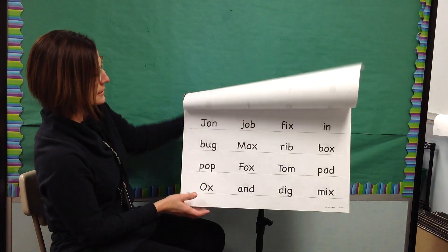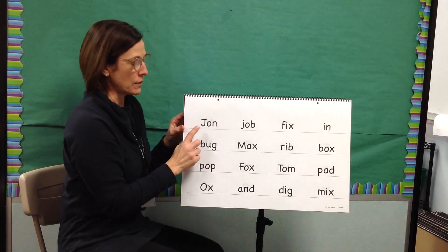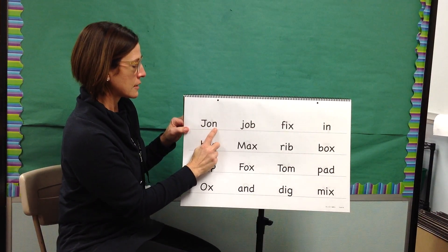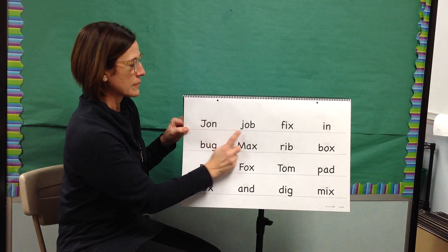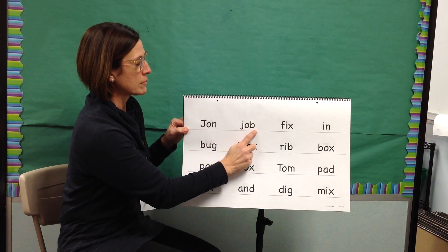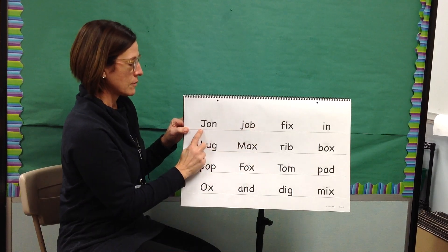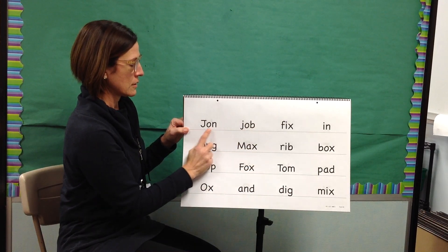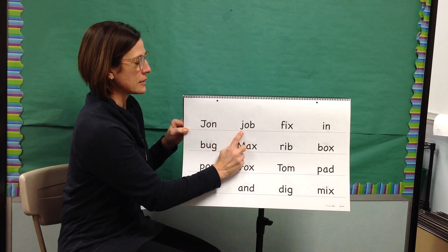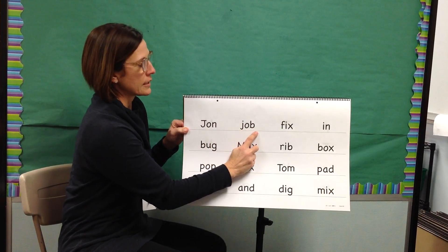Next we will blend sounds to make words. I will model the first two. My turn. Blend: John. Word: John. My turn. Blend: Job. Word: Job. Your turn. Blend: John. Word: John. Yes, John. Blend: Job. Word: Job. Yes, job.